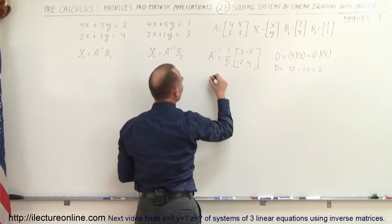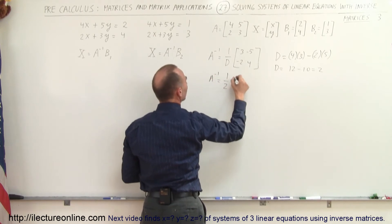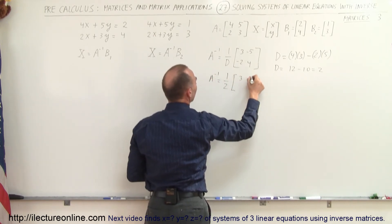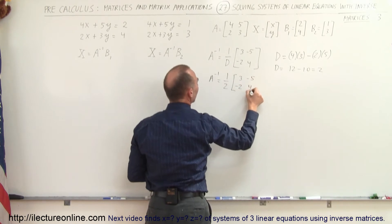And therefore the inverse of the matrix is equal to 1 divided by 2 times 3, minus 5, minus 2, and 4.